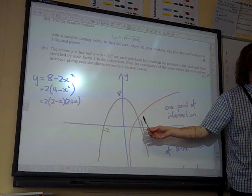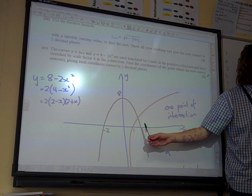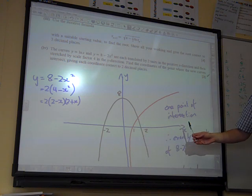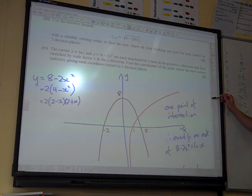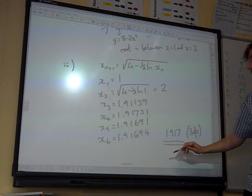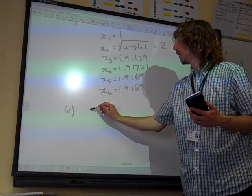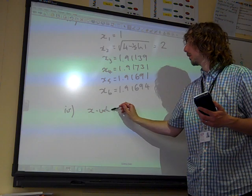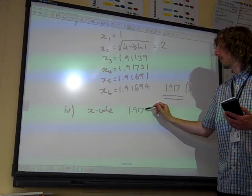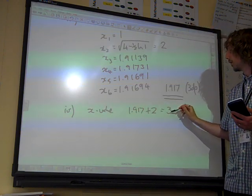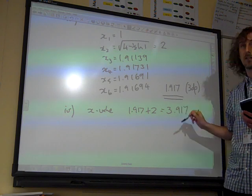Well, in terms of the x point where they intersect, that just means we've added 2 to it, doesn't it? It's moved 2 across. So the x value.